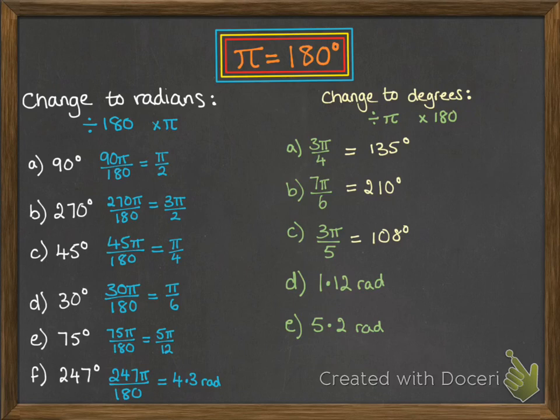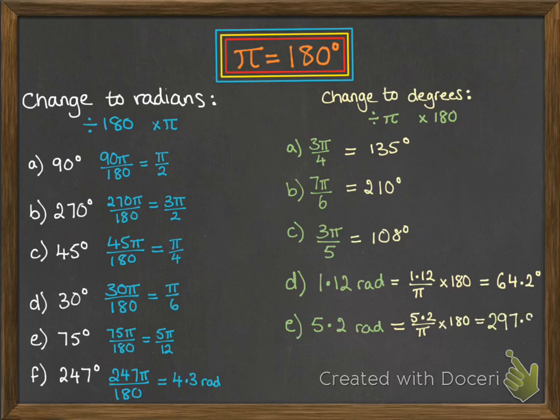Now these ones are in decimals. 1.12, we'll divide it by π. These ones you'll have to do on the calculator, so divide it by π times by 180. And 5.2 radians, divide it by π, times by 180 is 297.9 degrees. 1.12, divide it by π, times by 180, 64.2 degrees.